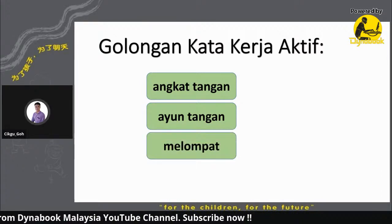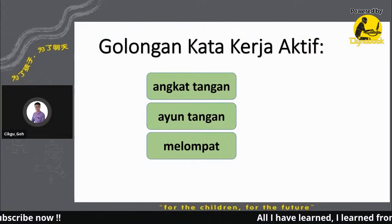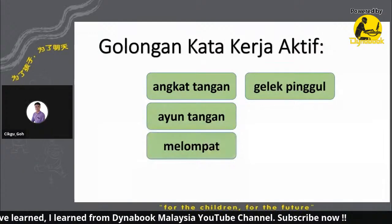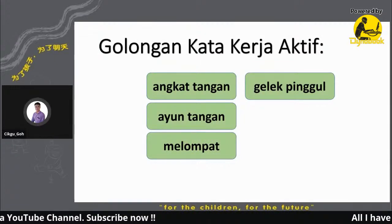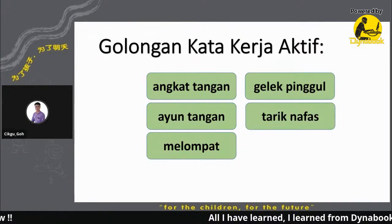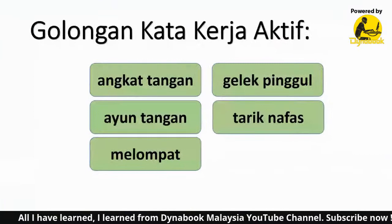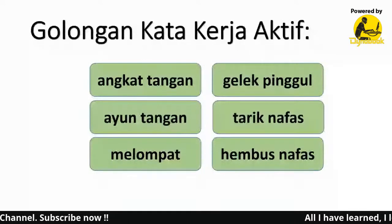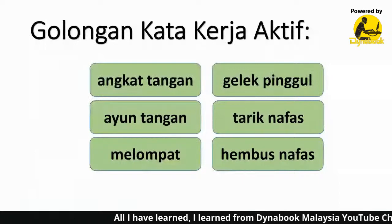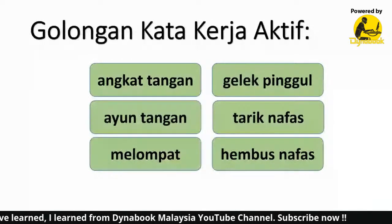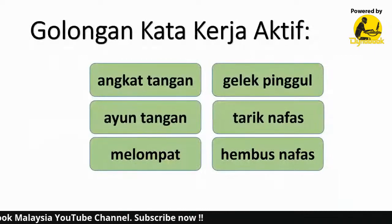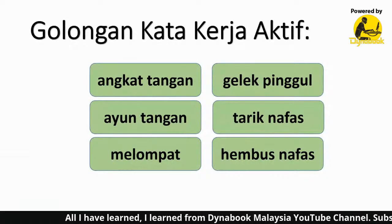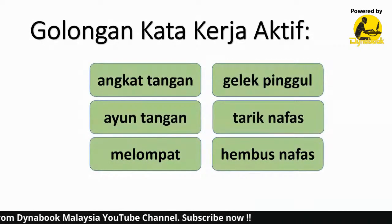Yang ketiga, melempat sikit. Keempat, gelek pinggul. Lepas tu, tarik nafas sikit. Lepas tu, hembus nafas. Ini merupakan kata kerja yang kita nak laksanakan. Tindakan yang biasa kita buat waktu kelas Pendidikan Jasmani. Angkat tangan, ayun tangan, lompat, gelek pinggul, tarik nafas dan hembus nafas. Ini merupakan ayat ataupun kata kerja yang kita nak laksanakan.